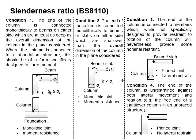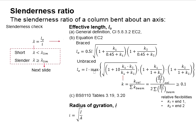Lastly, condition 4 refers to the column pin joint and also no rotational restraint at the column. With that, the effective length can be determined and the slenderness ratio of the column can be calculated.